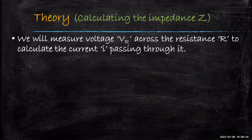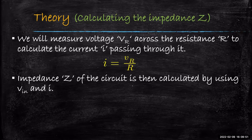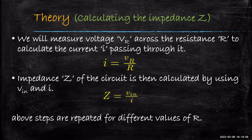So how will we go about the whole experiment? We will measure the voltage VR across the resistance R to calculate the current I passing through it, because that is governed by Ohm's law: I = VR / R. This current can then be used to find Z, because the same current passes through all components. The impedance Z of the circuit is given by Vin / I. These steps are repeated for different values of R, giving different values of I and Z.